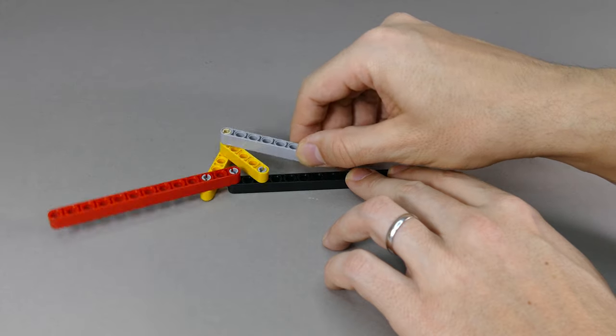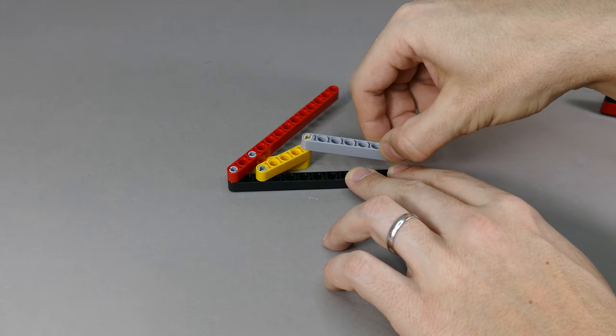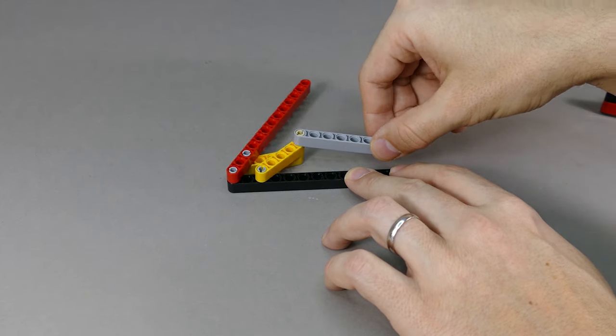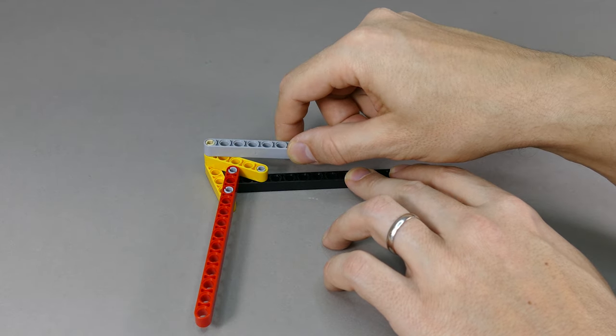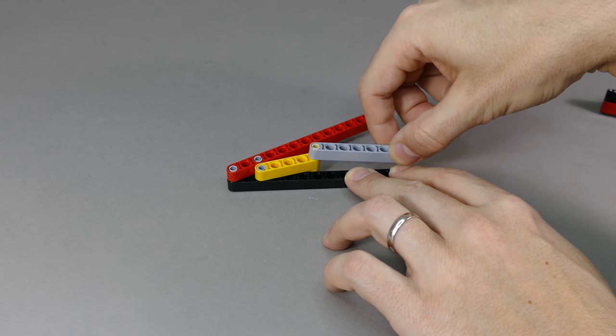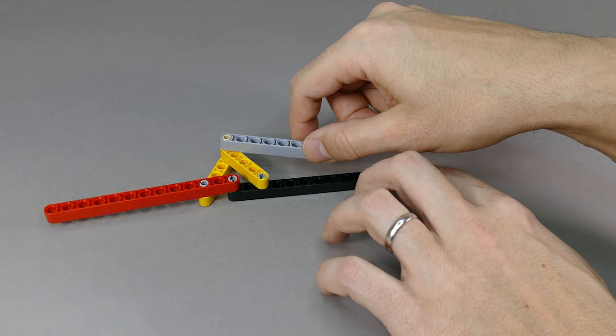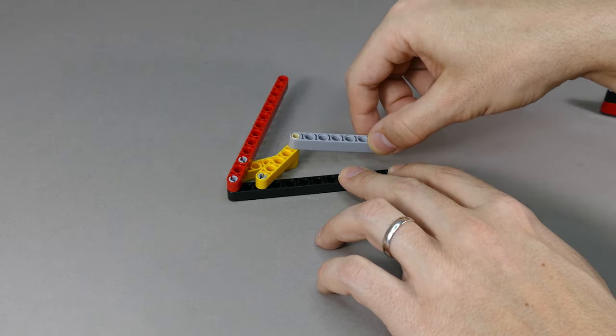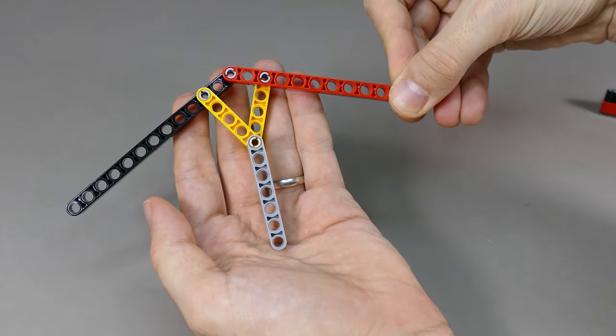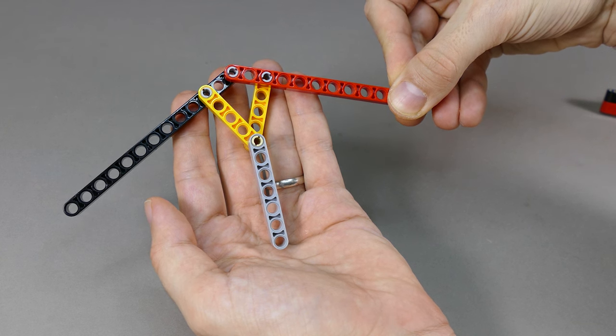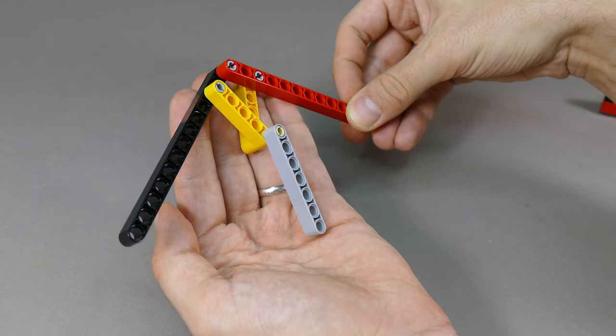By using linkage like this, you might get a lot more travel from the movement. In this case it's close to 270 degrees, and you can see that just by pulling or pushing on the gray beam I can get a lot of movement. Linkages like this are very often used on crane trucks on the foldable crane arms.